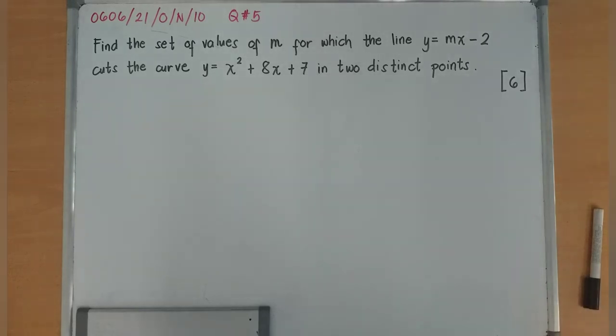I will now be discussing paper 2, variant 1 of IGCSE Additional Mathematics, October-November 2010, question number 5.